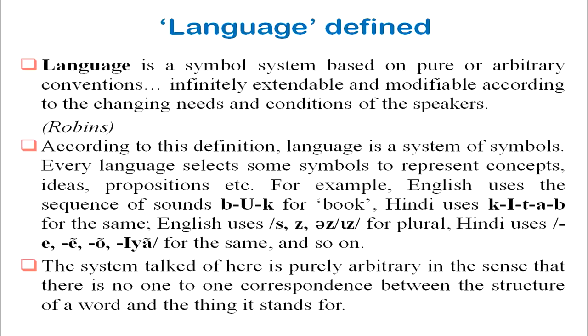Now let us talk about how human language differs from animal communication. Human communication is different from animal communication in certain features. According to Robbins, language is a symbol system based on pure or arbitrary conventions, infinitely extendable and modifiable according to the changing needs and conditions of the speakers.